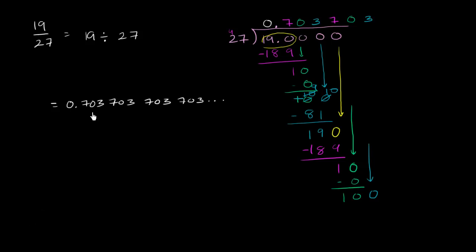So the notation for representing a repeating decimal like this is to say this is 0.703. And you put a line over the part that's going to repeat. So you put a line over the 7, the 0, and the 3. This means that the 703 will keep repeating on and on and on.